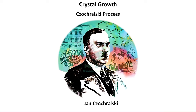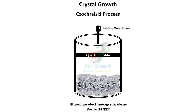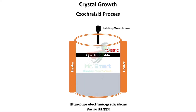The next step is crystal growth, which is done by the Czochralski process. The Czochralski process was invented in 1916 by Jan Czochralski, and it's still the most widely used method for growing single-crystal silicon today. Ultra-pure silicon is placed in a quartz crucible and heated to around 1,450 degrees Celsius, its melting point. A tiny single-crystal silicon seed is dipped into the molten silicon — this seed acts as the template for the crystal structure.